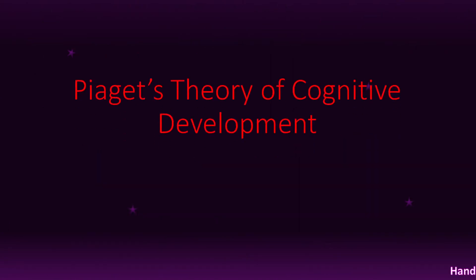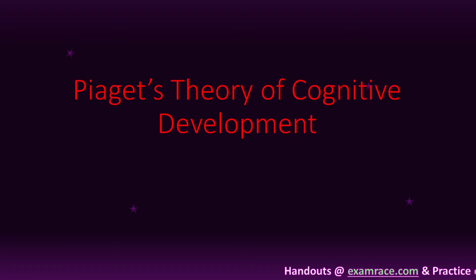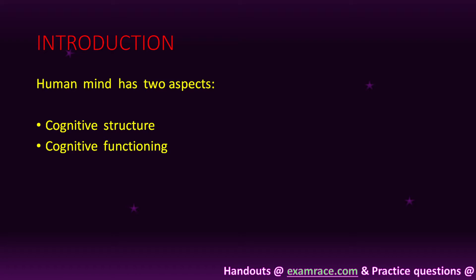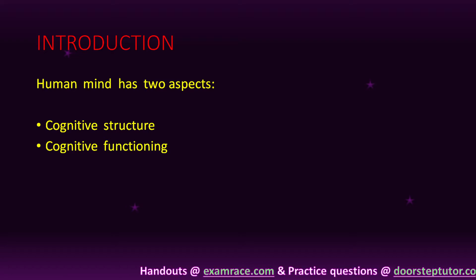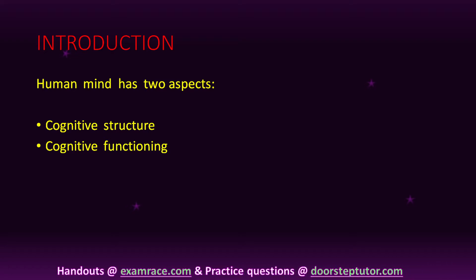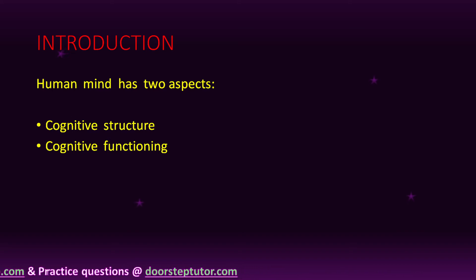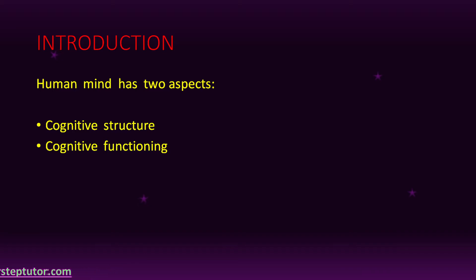Hi everyone. In this video we will talk about Piaget's theory of cognitive development. According to Piaget, human mind has two aspects: cognitive structure and cognitive functioning. For understanding this, we should first have to understand what is cognitive development.